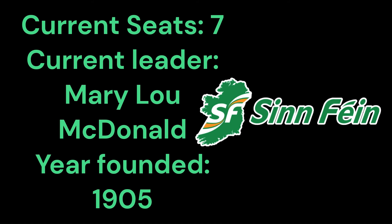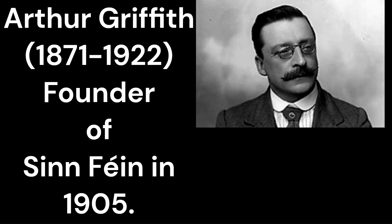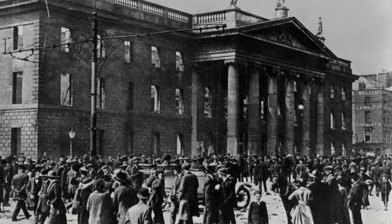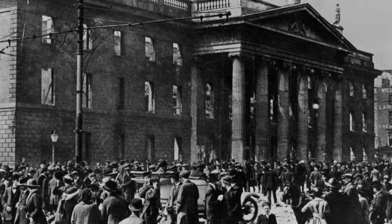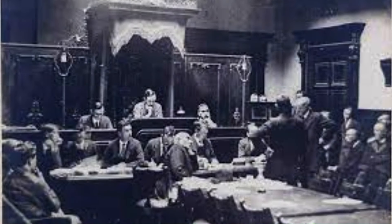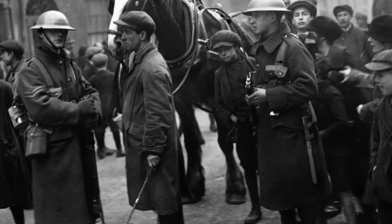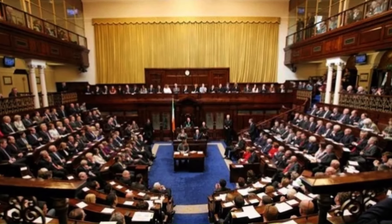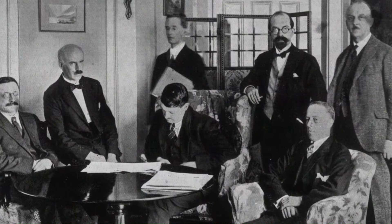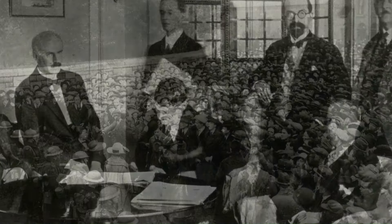Next, in chronological order, we have Sinn Féin, founded in 1905 by Arthur Griffith with the aim of establishing an Irish republic. Initially the party focused on promoting Irish culture and economic self-sufficiency within the United Kingdom. The Easter Rising of 1916 — a rebellion against British rule in Ireland — played a crucial role in shaping the trajectory of Sinn Féin. Following the rising, Sinn Féin gained popularity as a political force and became the political wing of the Irish Republican Army during the War of Independence between 1919 and 1921. The party boycotted the British Parliament and established the first Dáil Éireann in 1919.